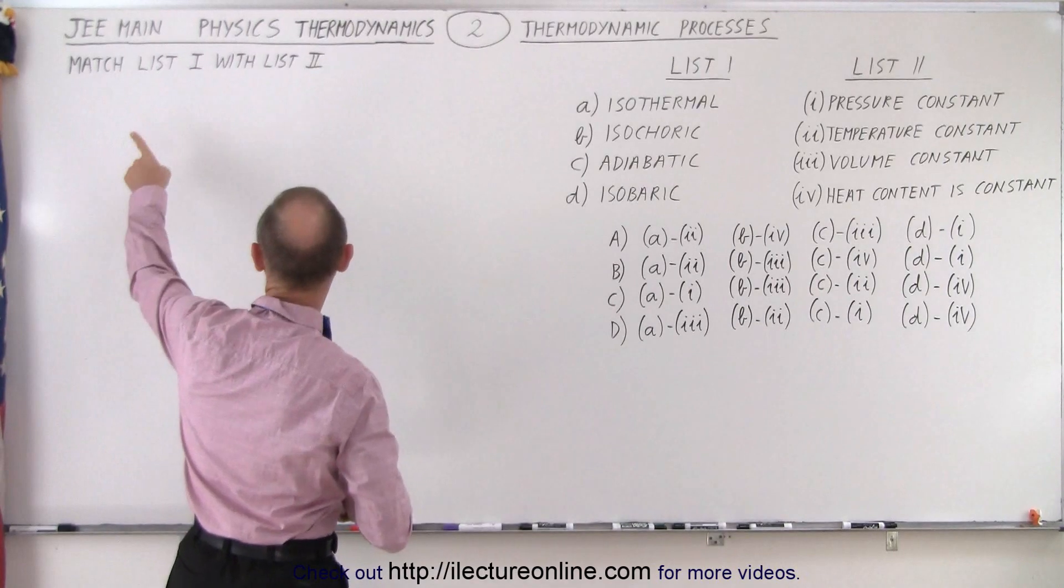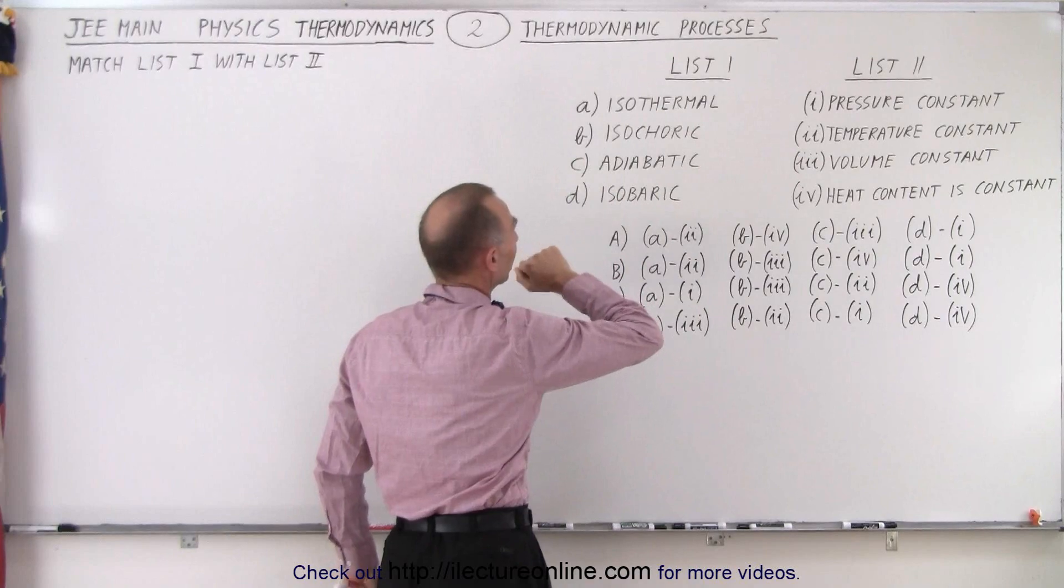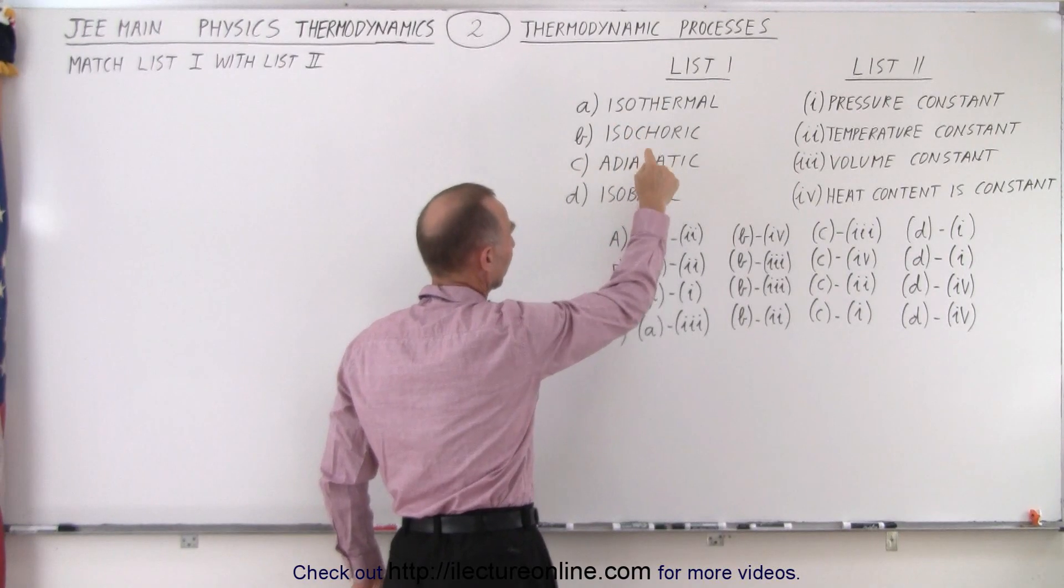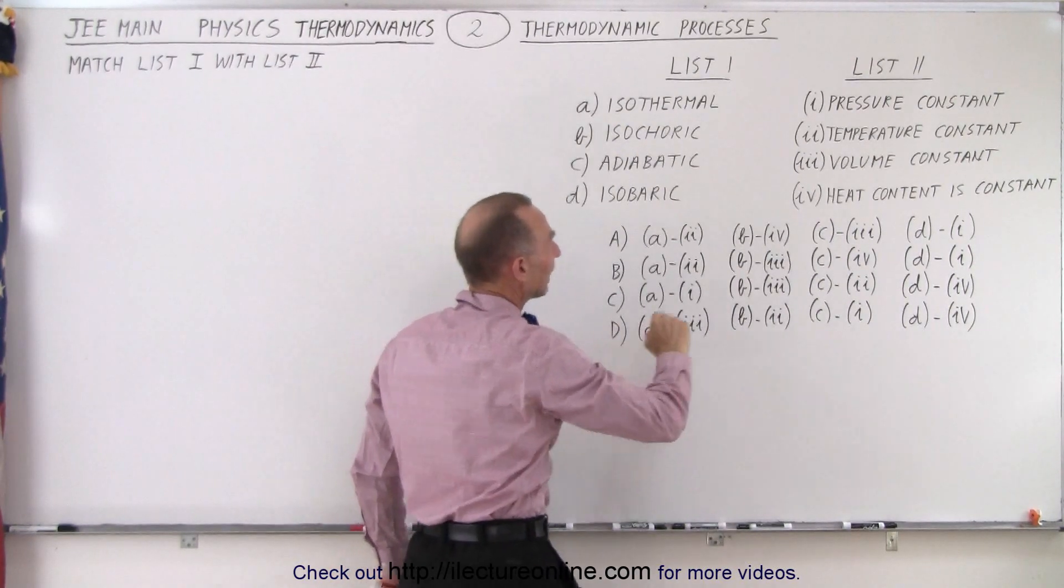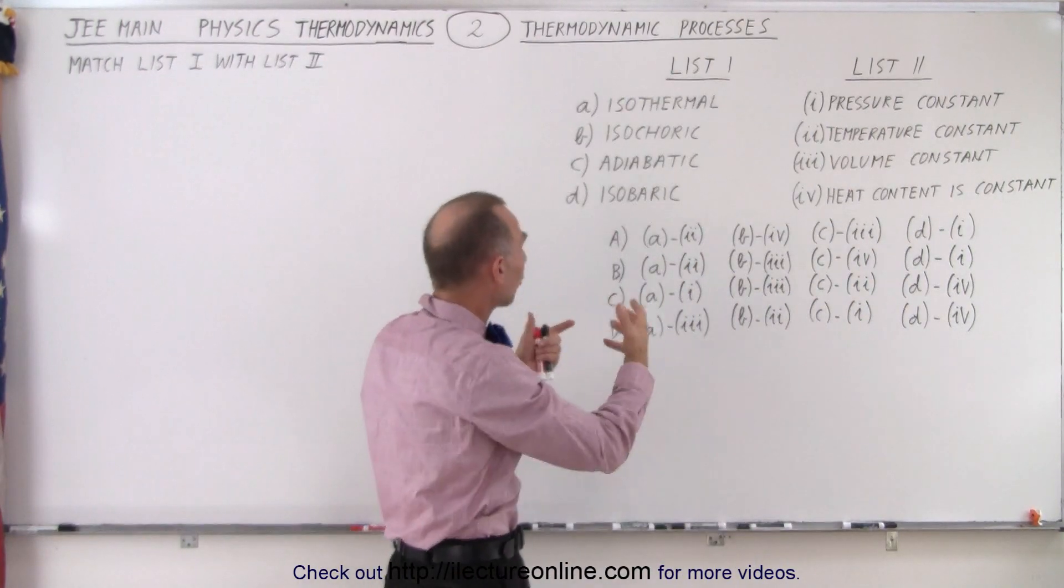The question says match list one with list two. And on list one we have four thermodynamic processes: isothermal, isochoric, adiabatic, isobaric, and then on list two we have properties associated with the four processes.